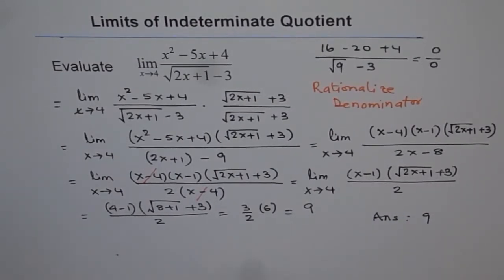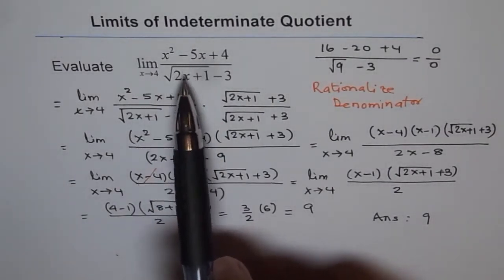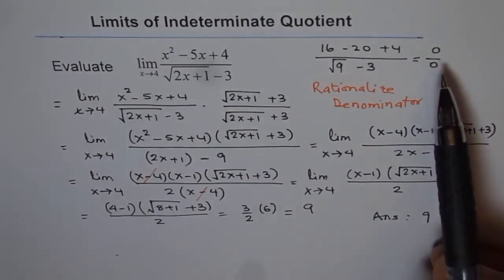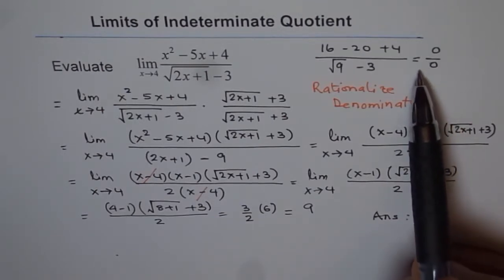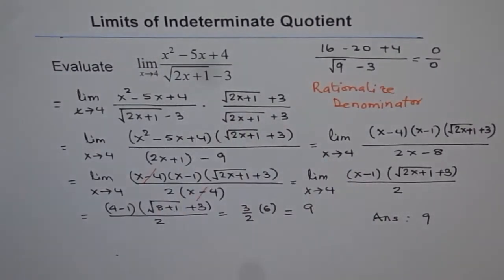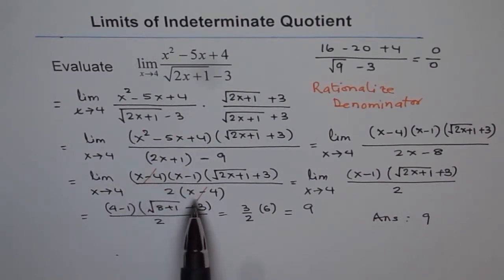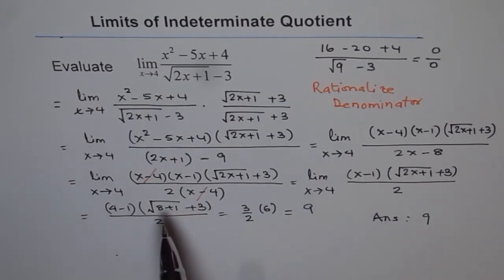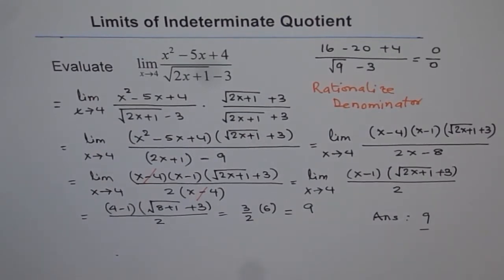Let's recap. We substituted the limiting value of 4 and found an indeterminate quotient. Since we had a square root term in the denominator, we rationalized it. After rationalization, x minus 4 appeared as a factor in both numerator and denominator, which got cancelled. Then substituting 4, we get our answer: 9.